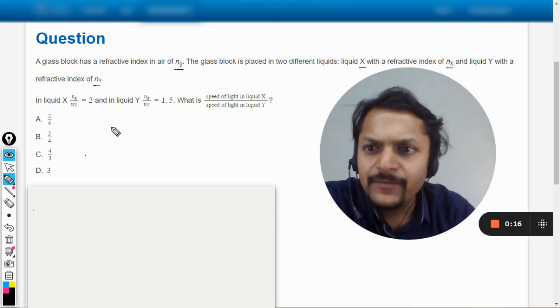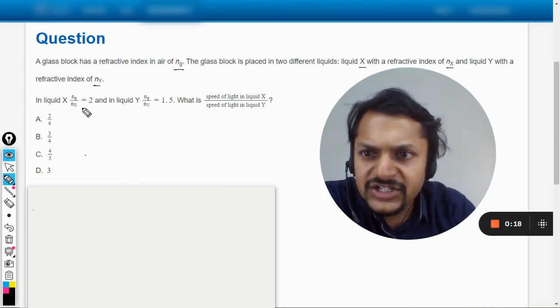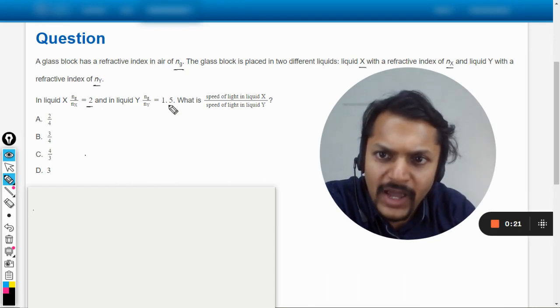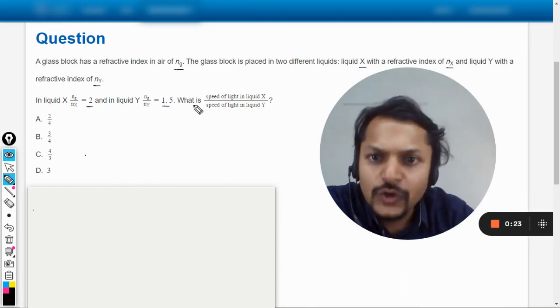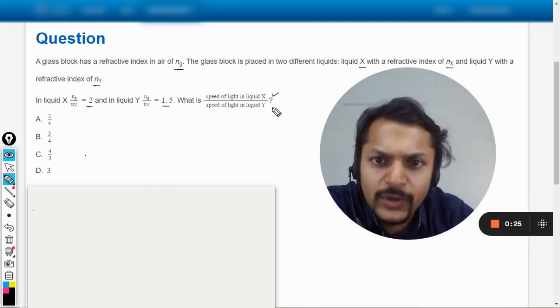In liquid X, NG/NX comes out to be equal to 2. In liquid Y, it comes out to be equal to 1.5. So what is the speed of light in liquid X divided by speed of light in liquid Y?